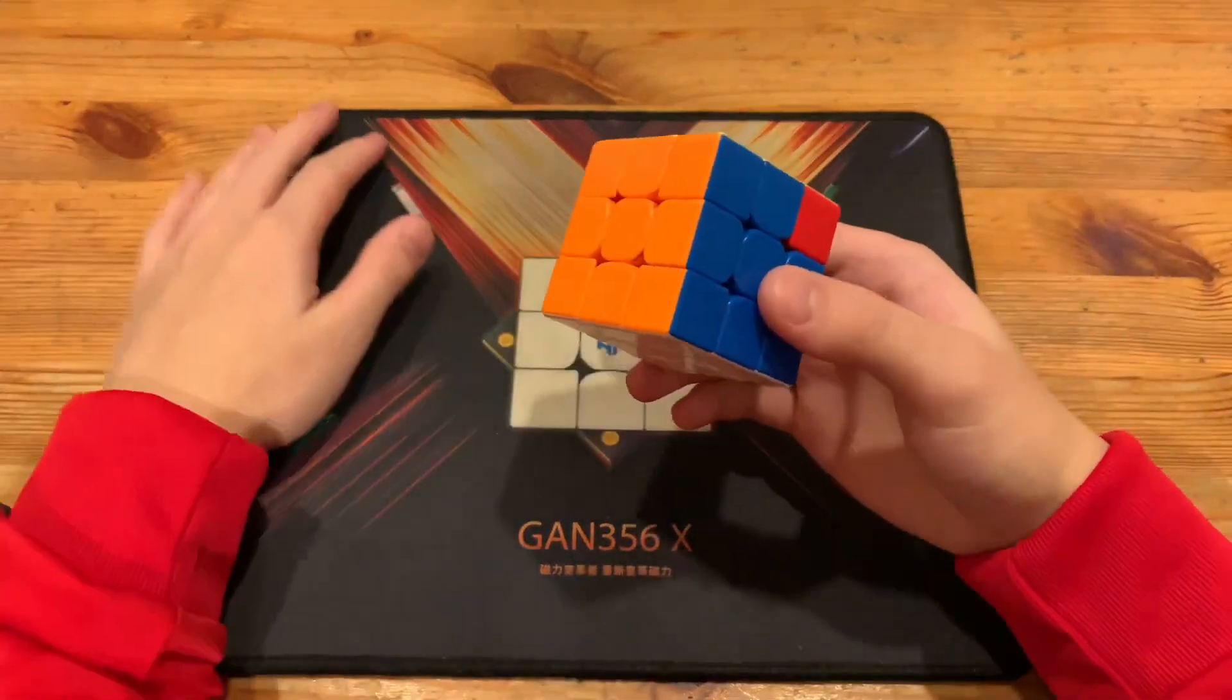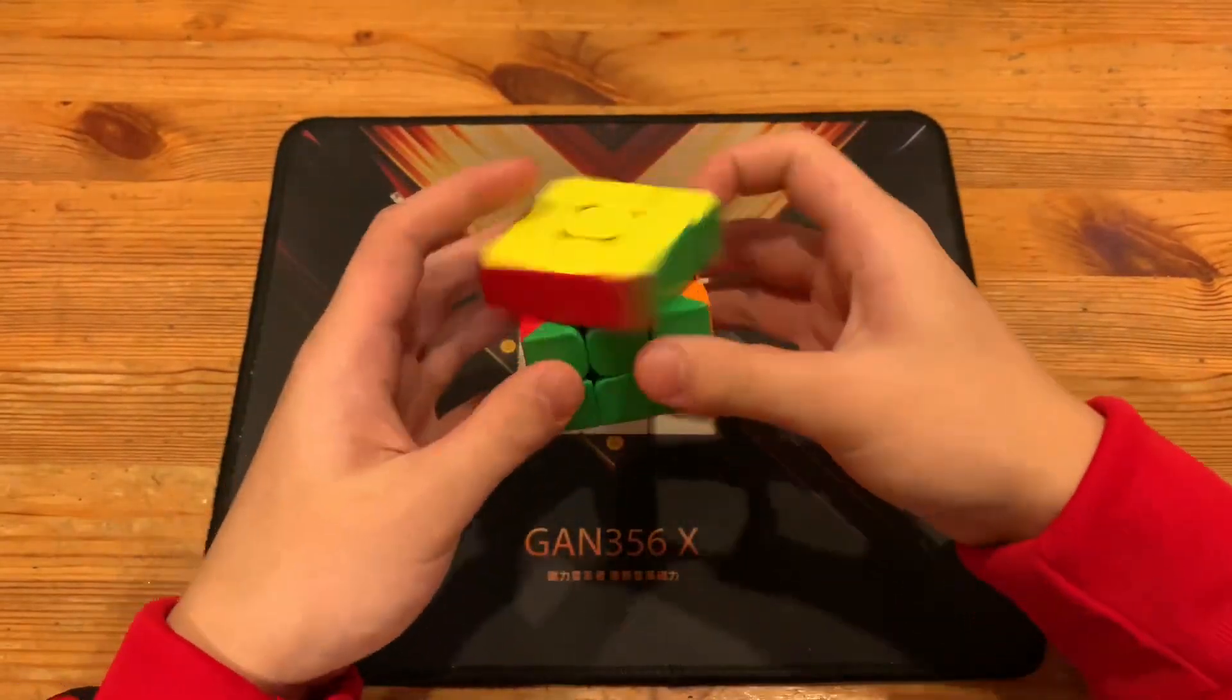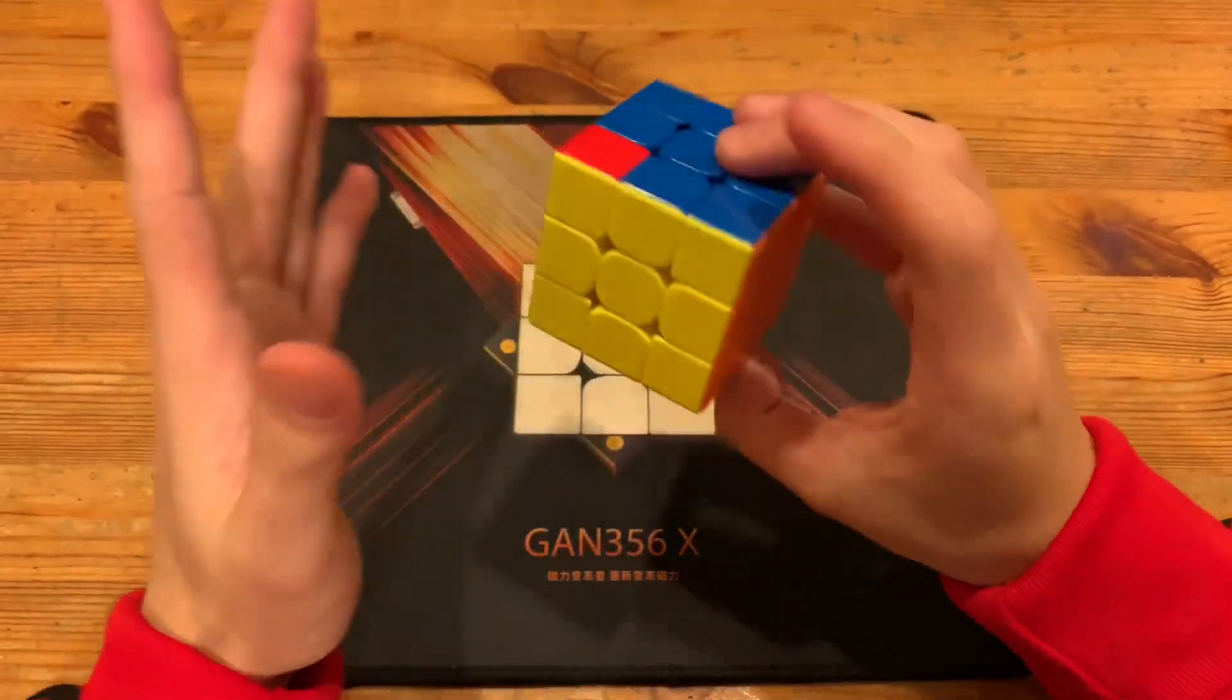Fun fact, since Jperm is lefty for cubing, he does Aperm lefty, and this is actually the Jperm he prefers.